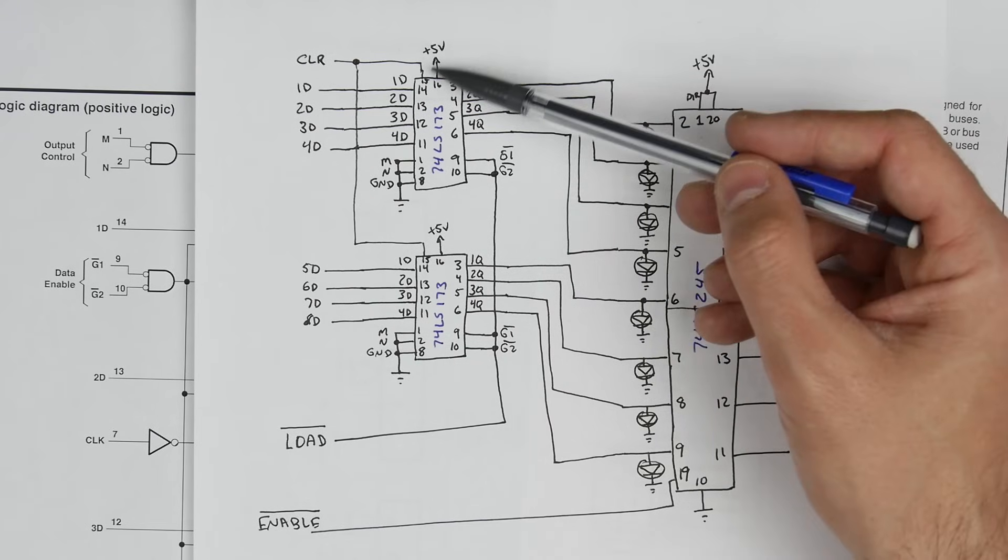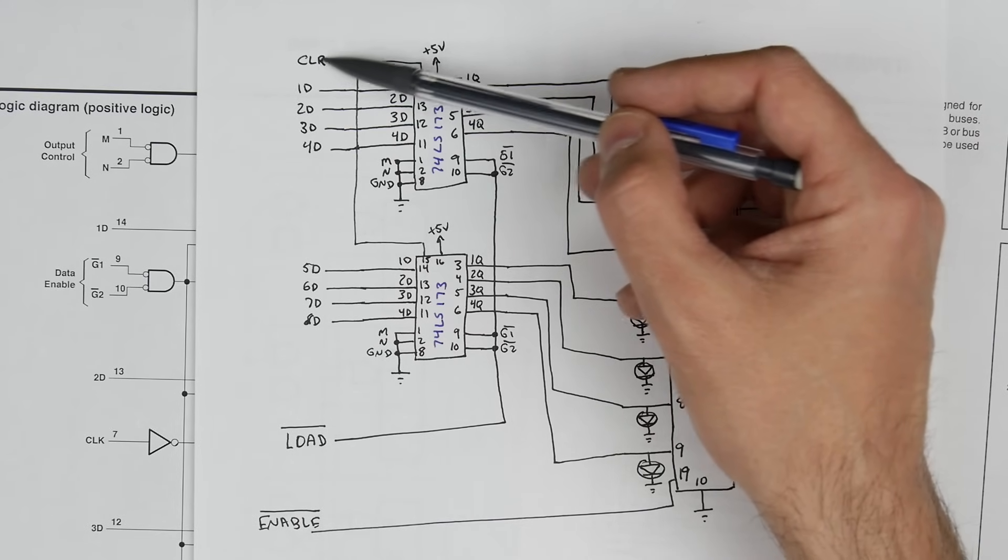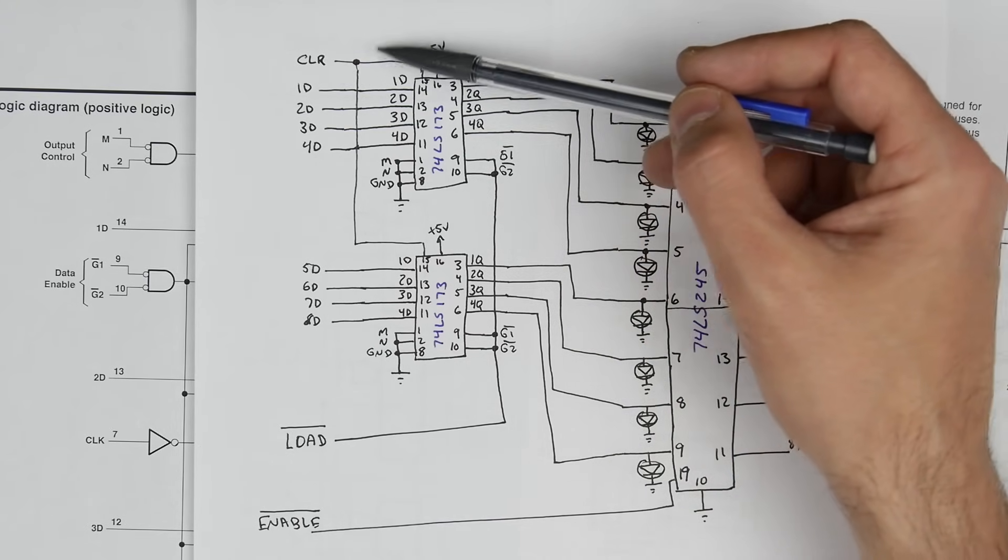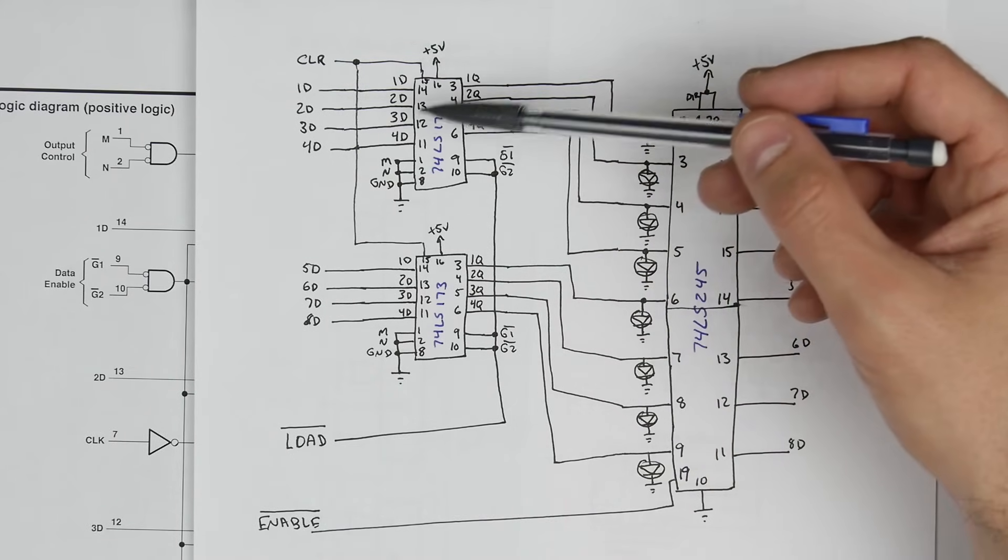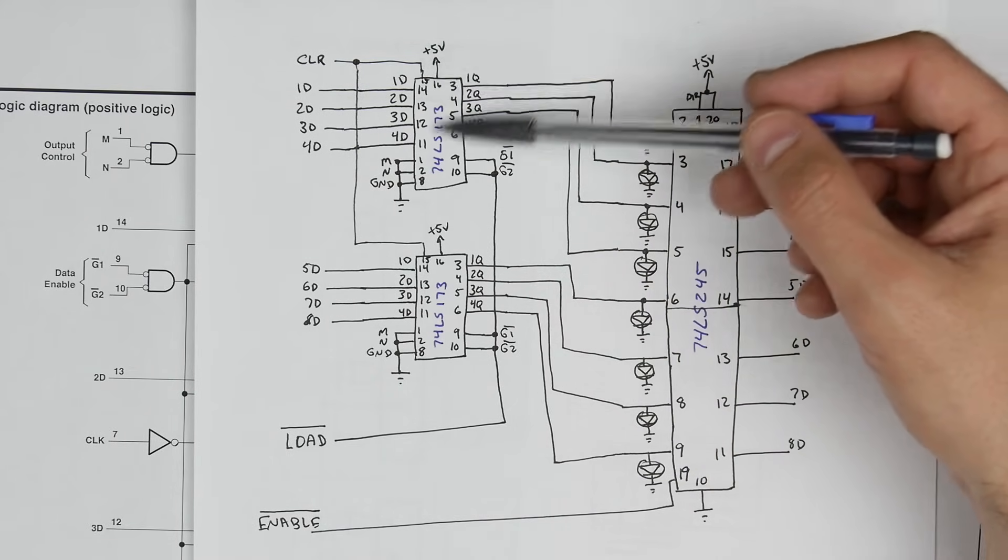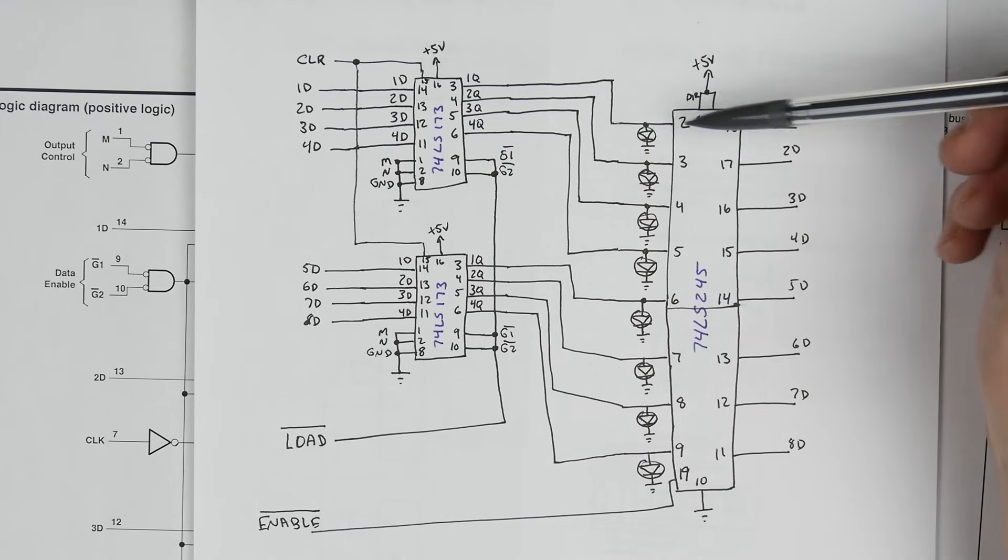I did draw pin 15 here, which is the clear line, which we're not going to use yet, but eventually when we get the rest of the computer built, we'll want to tie all these clear lines together so you can have a button somewhere to just clear everything in the computer, which can be helpful. And I think that's pretty much it.